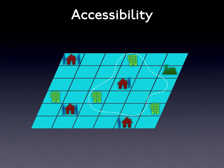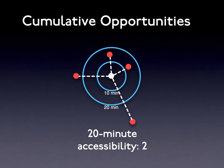Accessibility, as we mean it, measures the ease of reaching destinations. We define it more formally as the mathematical product of the number and quality of destinations that can be reached, and the general cost — combining time, money, and other factors — of reaching them. More specifically, a cumulative opportunities accessibility measure evaluates the number of destinations that can be reached in a given time threshold.